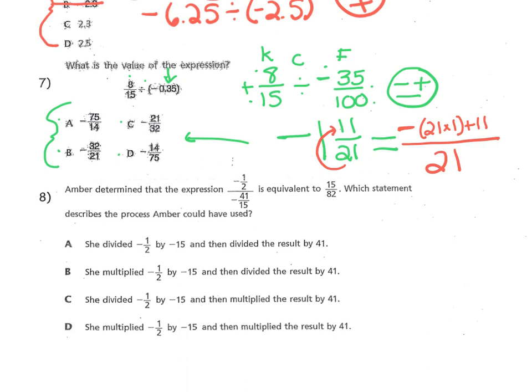Clearly, because we're looking for an improper answer, it's not negative 21 over 32. And it's not negative 14 over 75. It has to be either A or B.